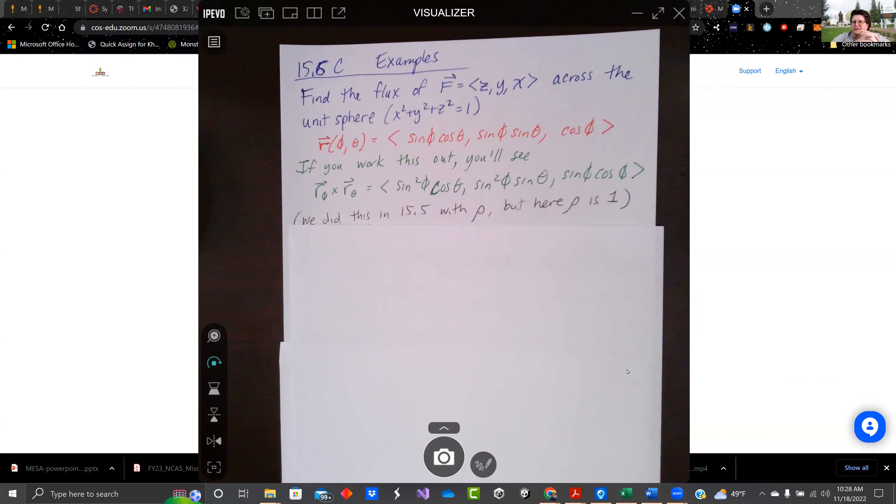Hey there, everybody. Welcome back. This is 15.6 in Anton's 11th edition. We're talking flux for Calculus 3. So let's just jump right into it. We got some examples.